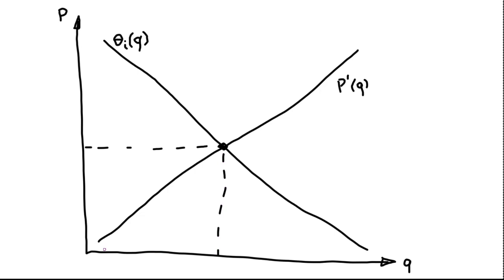You can see this as an iterative problem. The trader first asks: do I want to buy one unit? The marginal price P'(1) is pretty low, while the marginal valuation of the first unit is pretty high. For each successive unit, the marginal price keeps increasing while the marginal valuation probably keeps decreasing.